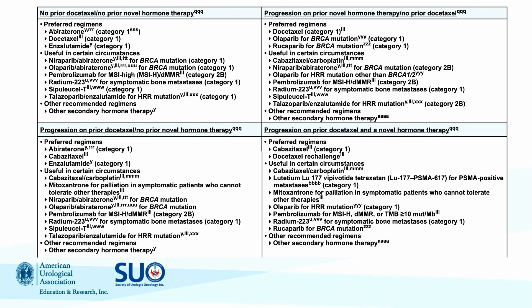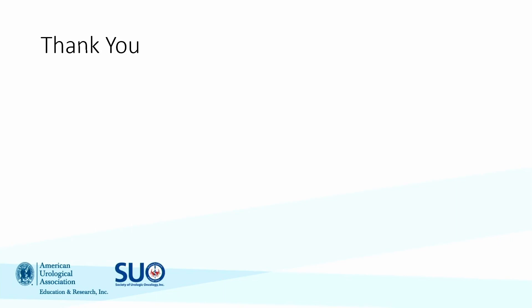Putting it all together: as you consider how best to manage your patient, think about what prior therapies they've received, the results of their genetic testing — and if you haven't done it, do it then — what their symptom burden is, and their comorbidities. Based on that, piece together what your patient should receive. Next year this chart will look a little bit different, but the factors we consider will likely remain the same. Thank you.